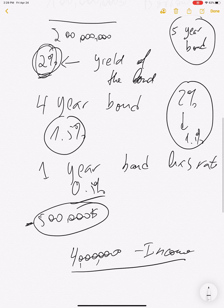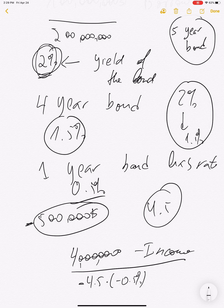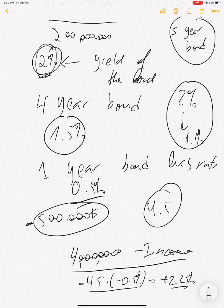The roll-down effect impacts your price. To calculate it: the duration of a five-year bond is roughly four and a half years. You multiply four and a half by the yield drop of 50 basis points (going from 2% to 1.5%), which gives you 2.25%. So the roll-down contributes an additional 2.25% price gain.